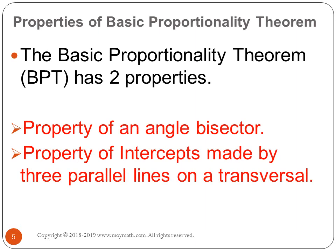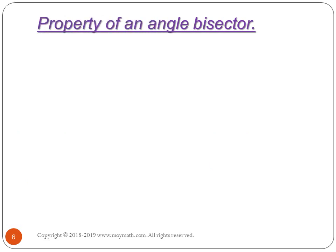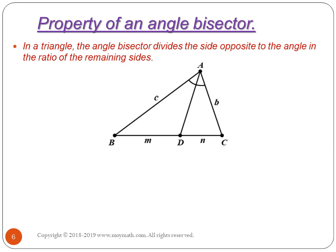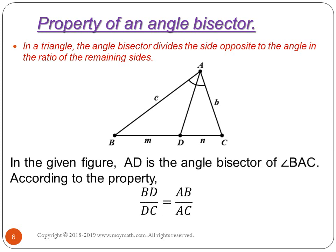There are two properties of the Basic Proportionality Theorem. The first property is the angle bisector property: in a triangle, an angle bisector divides the side opposite to the angle in the ratio of the remaining two sides. If in triangle ABC, AD is the bisector of angle BAC, then BD/DC = AB/AC. This is a very important property.